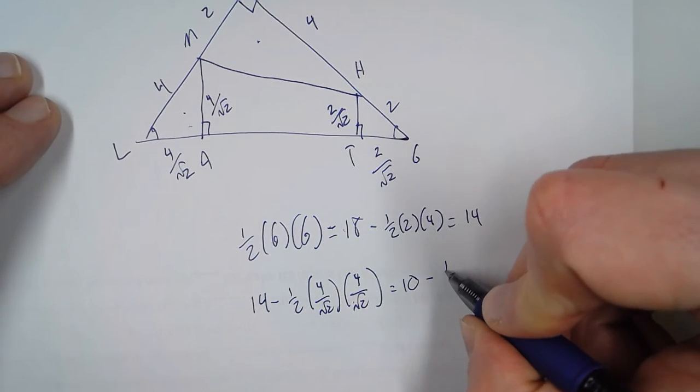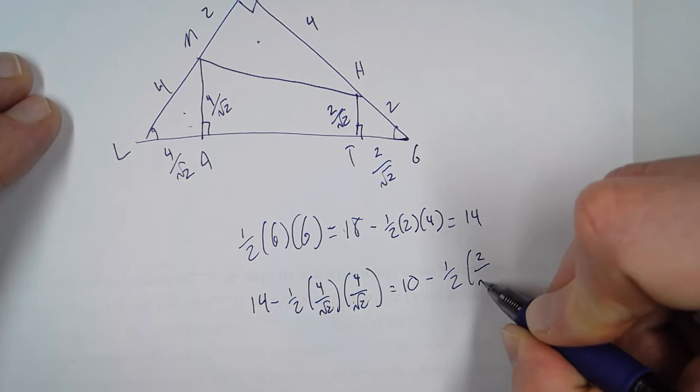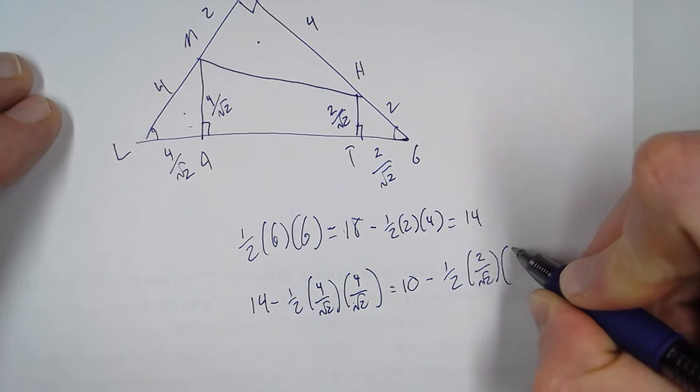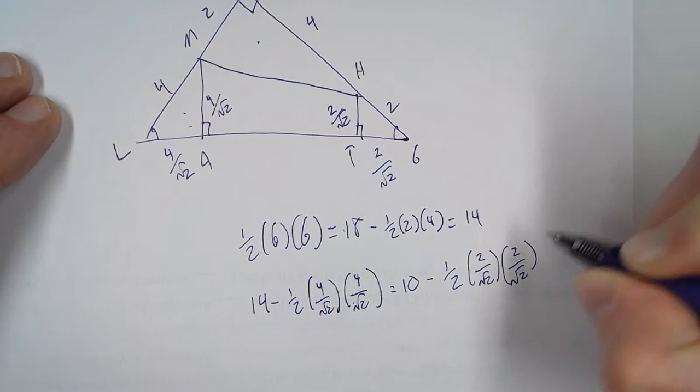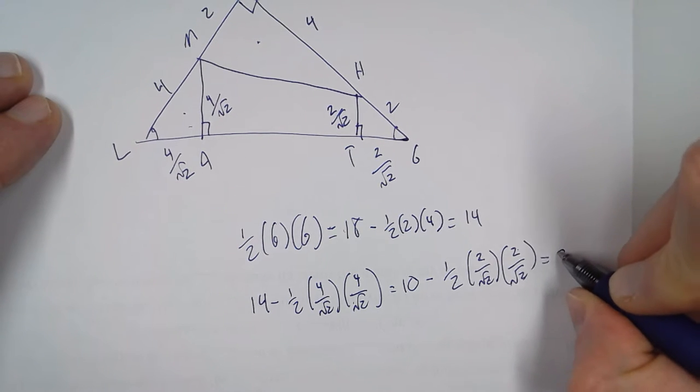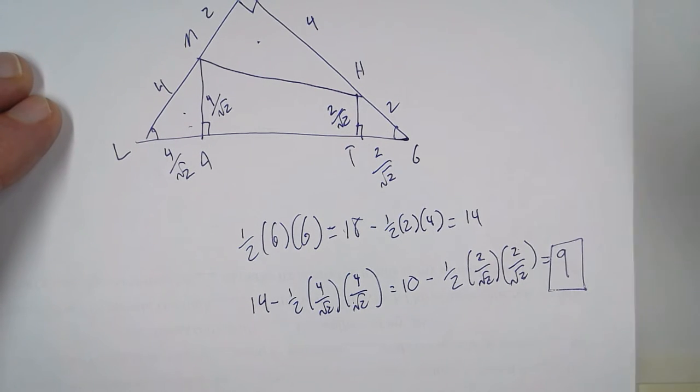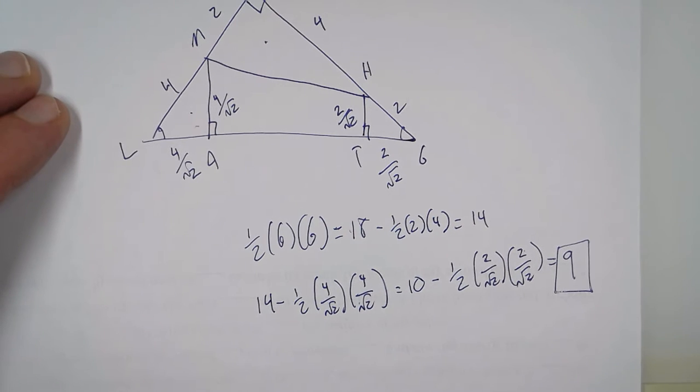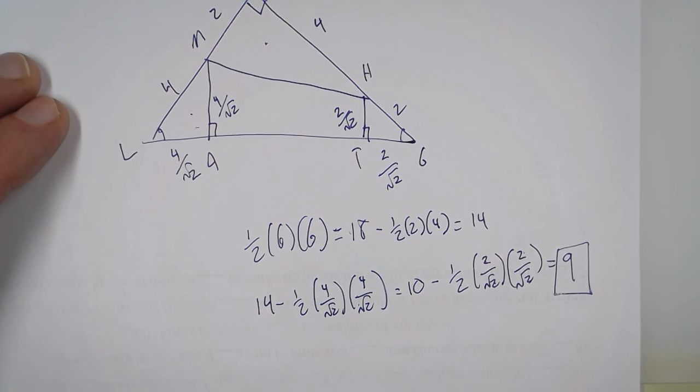And then minus 1 half, 2 over square root of 2, 2 over square root of 2. 2s cancel here. 2 times radical 2, radical 2 times radical 2 cancels this 2, so that's equal to 1. So, after I subtract all those triangles, we're left with 9. And there's our answer, and we're done.